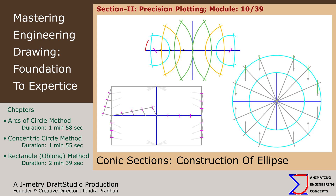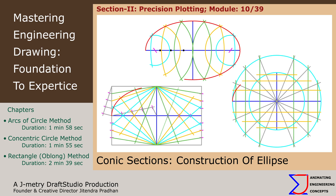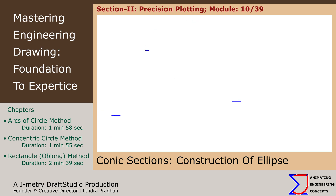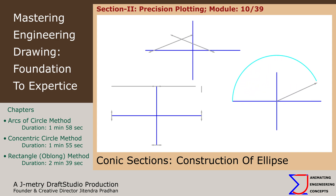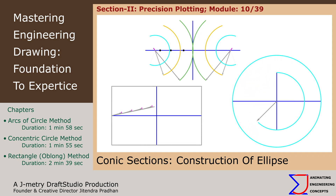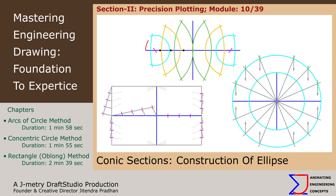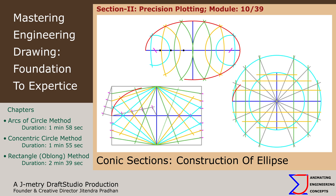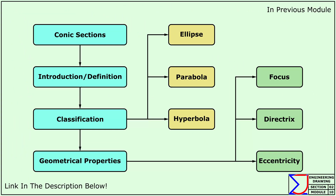Hello and welcome to the 10th module of Mastering Engineering Drawing: Foundations to Expertise. In this tutorial we will demonstrate various methods for the construction of an ellipse, a fundamental conic section. Previously we introduced conic sections and their importance in engineering drawing, exploring their geometric properties and applications focusing on the ellipse, parabola, and hyperbola. Now let's apply these concepts to construct an ellipse.